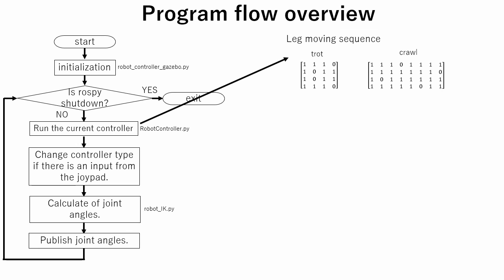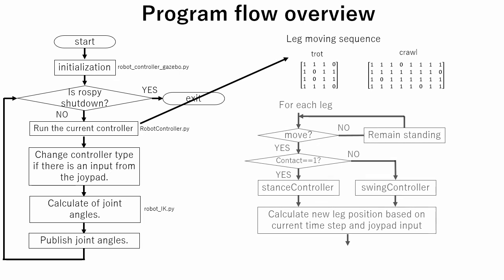Here is the leg moving sequence. Zero is for leg swing and one is for leg movement on the ground. As described in this flow chart, this robot has a separate controller for leg swing and leg movement on the ground based on the current time step and joypad input.